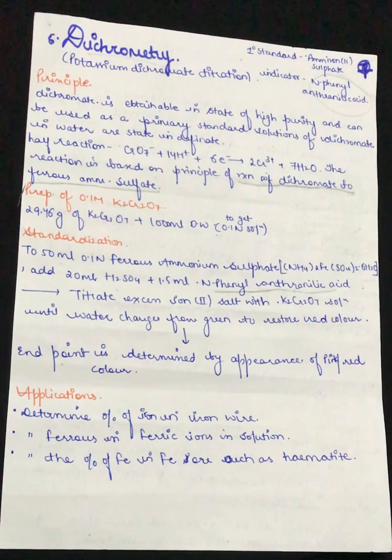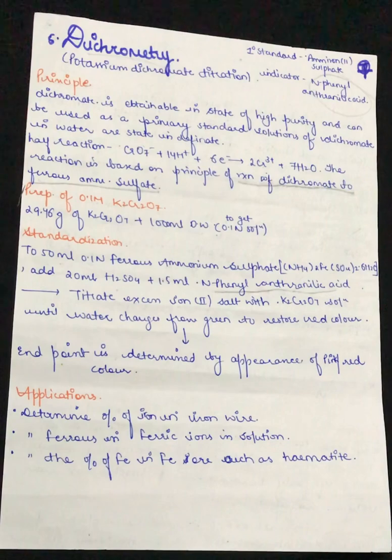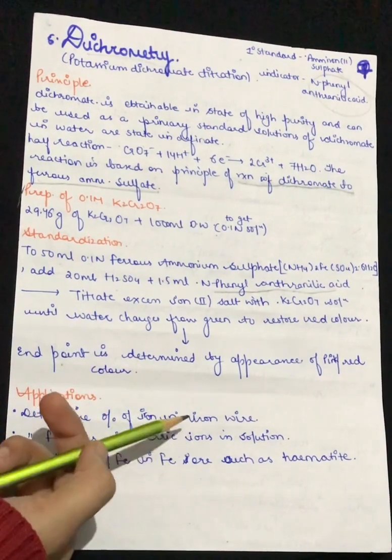The applications of dichrometry include: it is used in determination of percentage of iron in iron wire, and it is used in the determination of ferrous and ferric ions in solution.